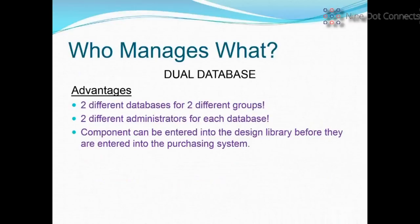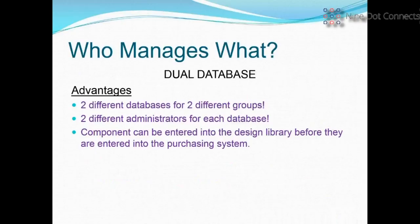If you can't allow orphan parts, you have to go to the concept of a dual database. The advantages of dual databases: two different groups with two different databases is actually a good thing — engineers have their needs and purchasers have their needs. You have separate administrators for each database, meaning you're not waiting on the purchasing guy to run everything. You have a local person who can get things done quickly. And the component can be entered into the design library long before it gets into the purchasing system — which is what happens anyway. In every design, there's probably a new part; the designer is always first to come up with it.